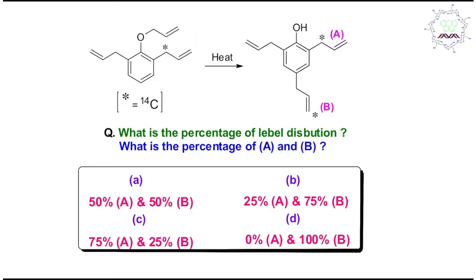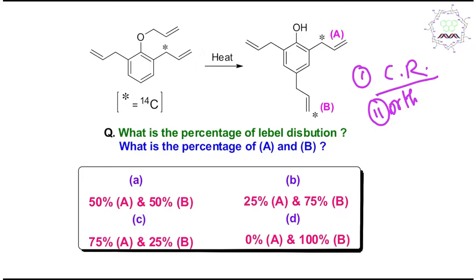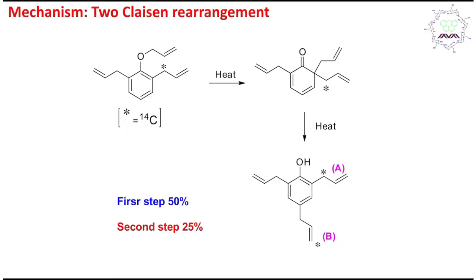This reaction is Claisen rearrangement. Remember: Claisen rearrangement is ortho-selective, but if the ortho position is blocked, then first Claisen and then Cope rearrangement occur to produce para substitution. In this case, both Claisen rearrangement and Cope rearrangement happen, ultimately producing this product. Before calculating the label distribution, we need to understand the mechanism.